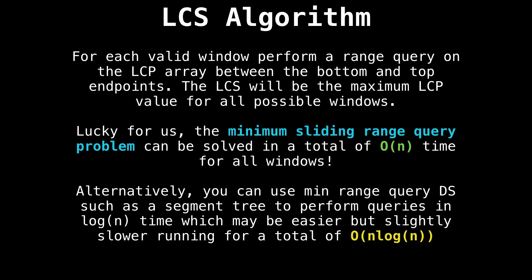Since we're dealing with a sliding window and not just any arbitrary range query, we can use a linear solution from the minimum sliding range query problem to obtain the value we want. Alternatively, I would recommend using a minimum range query data structure such as a segment tree to perform logarithmic range queries on the LCP array. This is theoretically a little slower, but it is much easier to implement, in my opinion.